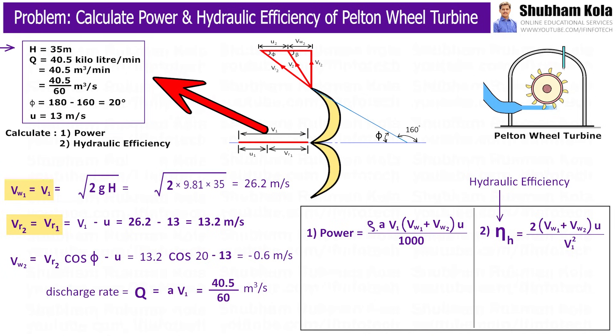But in given data, the discharge rate is provided in kiloliter per minute which is equal to velocity of jet at inlet i.e. V1 into area of jet i.e. a. So, I'll convert it in m³/s. And we know density of water i.e. ρ which is equal to 1000 kg/m³.